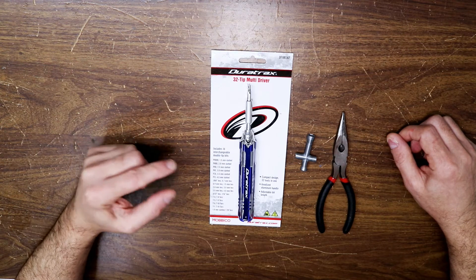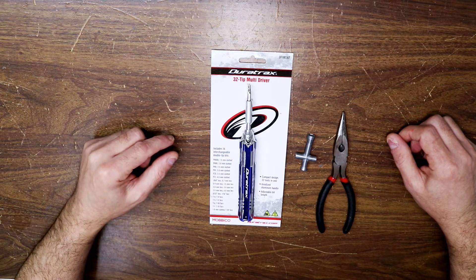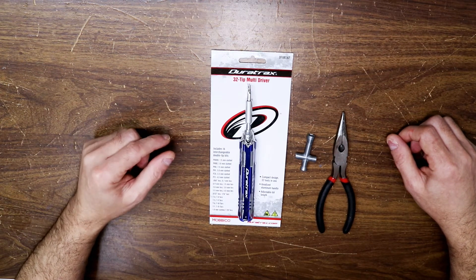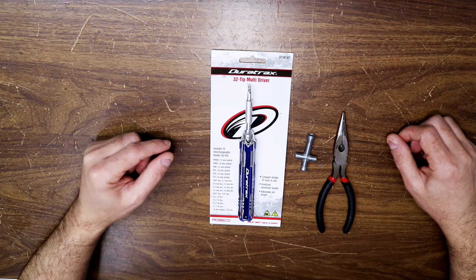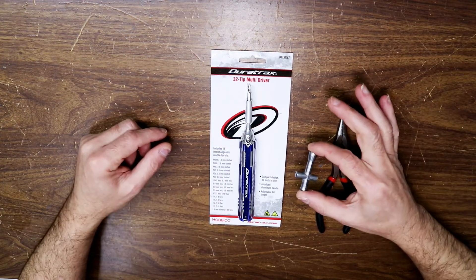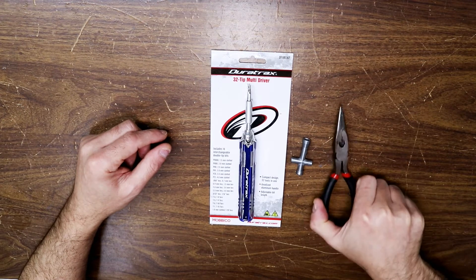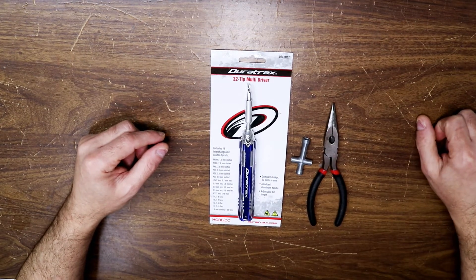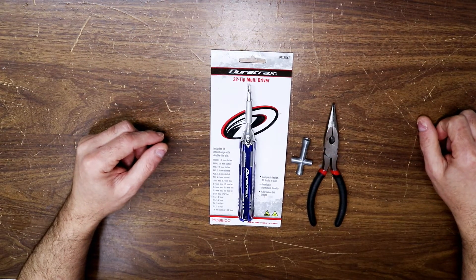And it's really compact and it'd be awesome to have in your toolbox. And also if you go out riding, bashing your RCs, you could probably just bring this, maybe a Tamiya wrench like this and a needle nose and you'll be set to fix most repairs or tighten anything up.